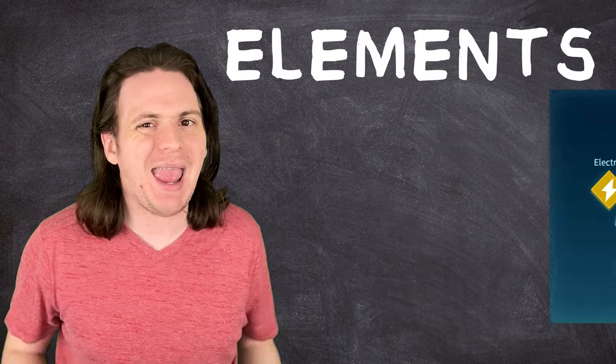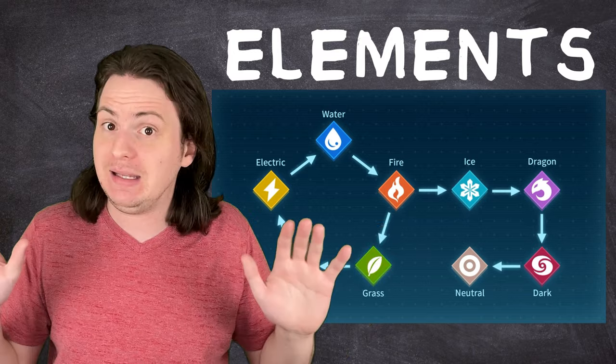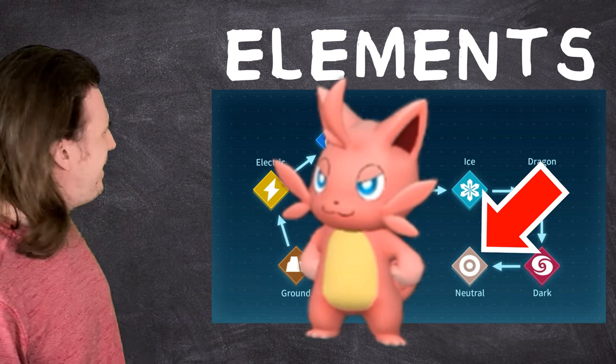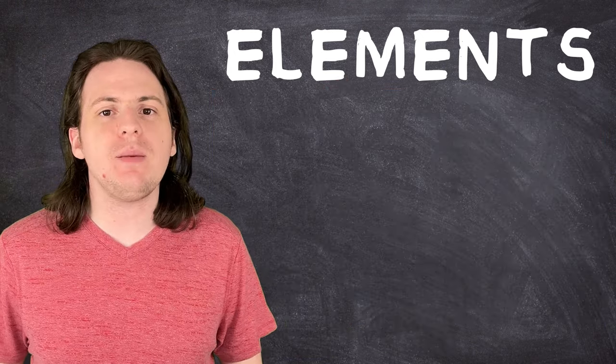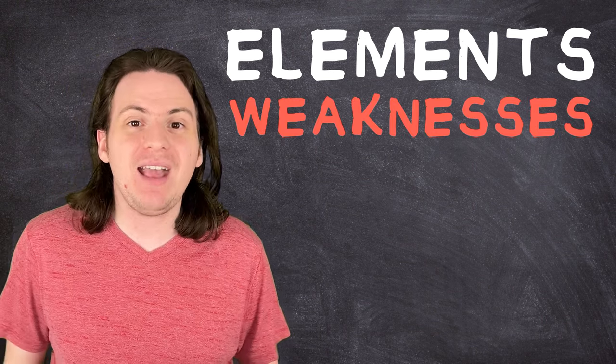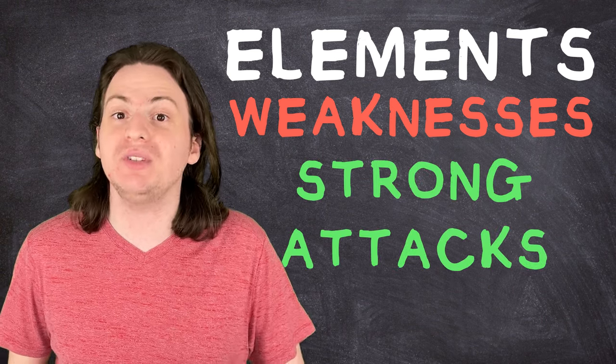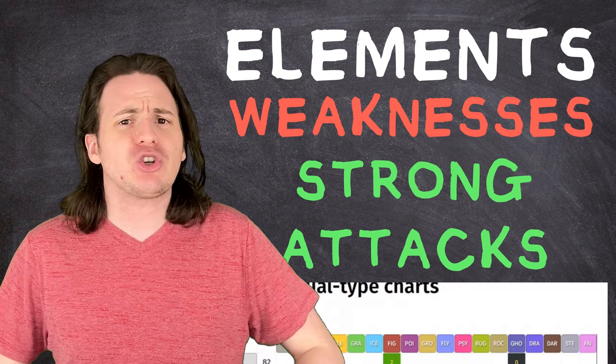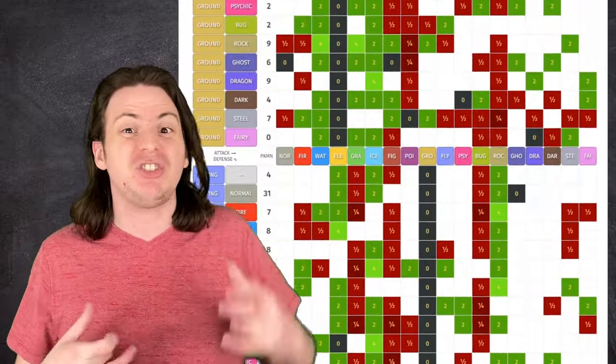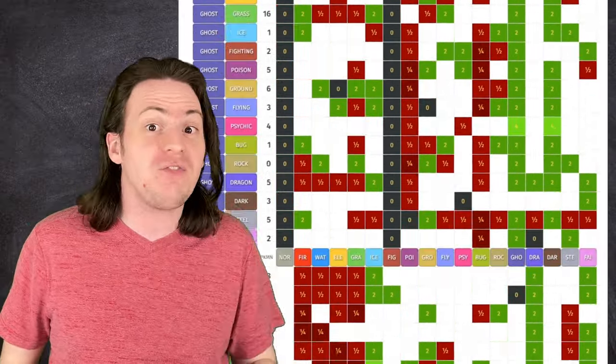The next two criteria have to do with elements. Palworld has eight different elements that are totally, legally distinct from Pokemon's types. I mean look, our early rodents are neutral type, not normal. I mean, it's a totally different thing. A pal's element determines two things: the types of attacks that it's weak to, and the types of attacks that it can use for boosted damage.